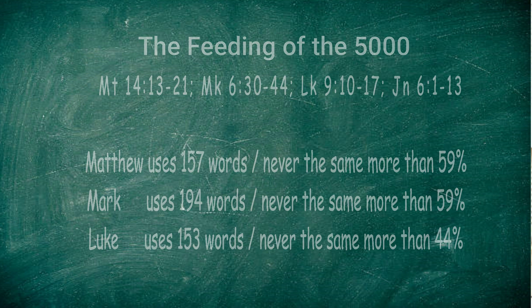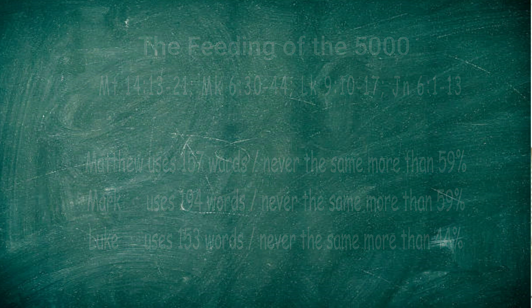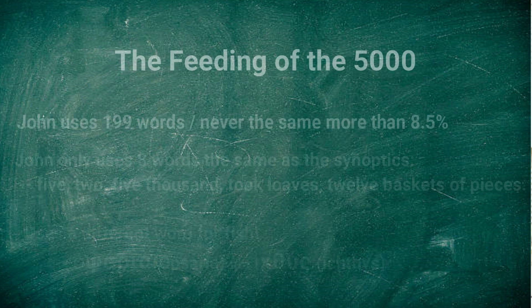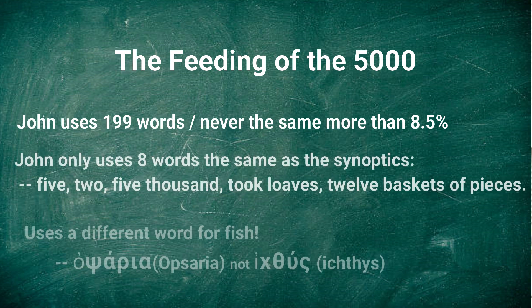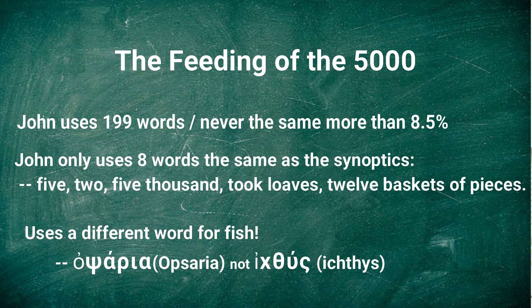Luke uses 153 words and is never more than 44% the same as the others. John uses 199 words, and the most he's ever in line with any of the synoptic Gospels is 8.5%. Out of his story, he only uses 8 words the same as the other three Gospels: the word '5,' the word '2,' '5,000,' the phrase 'took loaves,' and '12 baskets of pieces.' That's really the only overlap in the story.